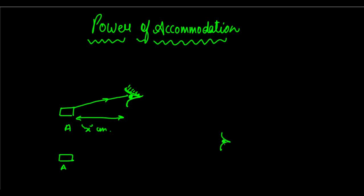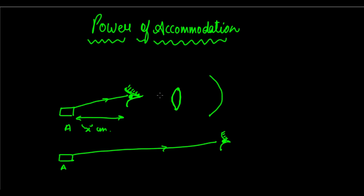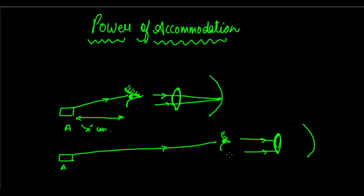Now suppose that same object is at A but the person looks at it from a farther distance. The light will still go to the eye, but to focus on that object the eye lens will have to change. Here the lens had some particular focal length, but the retina is fixed. So when the person moves farther, the eye lens will have to decrease its focal length to still focus light on the retina.